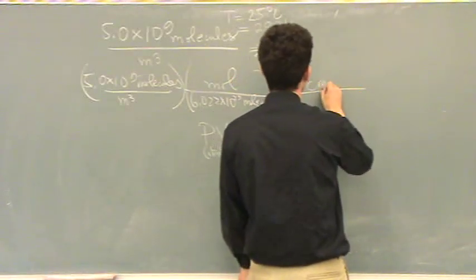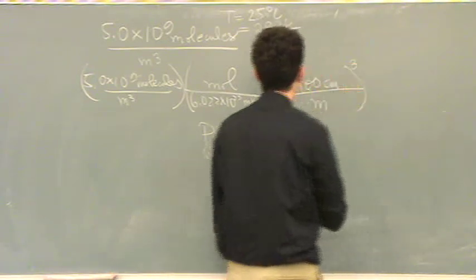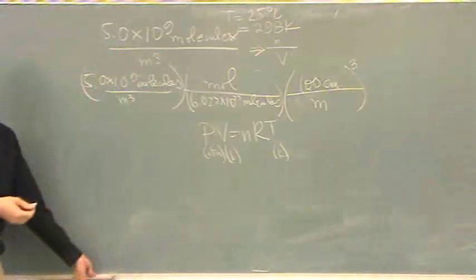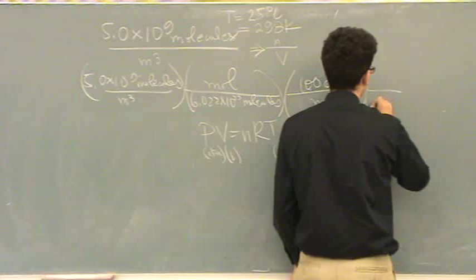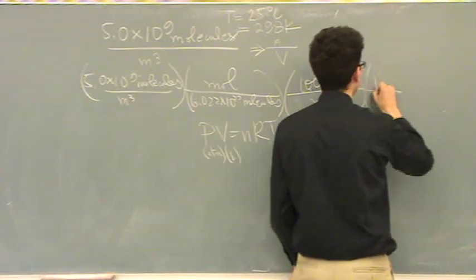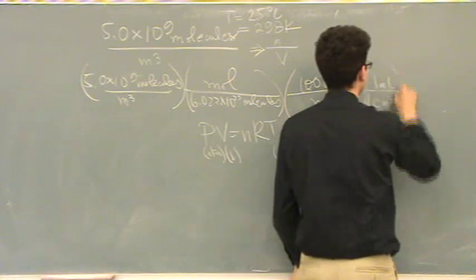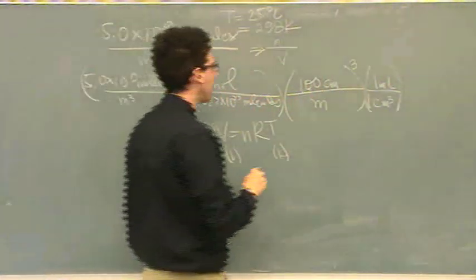So I'm going to change this to centimeters. A hundred centimeters per meter and I'm going to cube that. So now it's centimeters cubed. And I know that for every centimeter cubed there's one milliliter. Wait, don't you want the meters on top? Oh yeah.